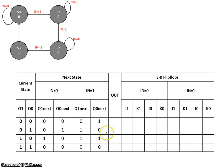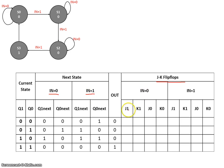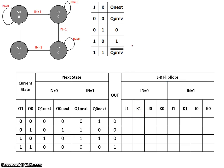Now let's look at the output. Output is 1 only in state S3. Now we need to figure out the combinational logic — how do we go from the current state to the next states when input equals 0 or 1. We need to figure out the logic at the J and K inputs of the two flip-flops. Let's take a quick look at the truth table of a JK flip-flop, and using that truth table we can start filling out this table. To simplify that task, let's do a quick exercise.